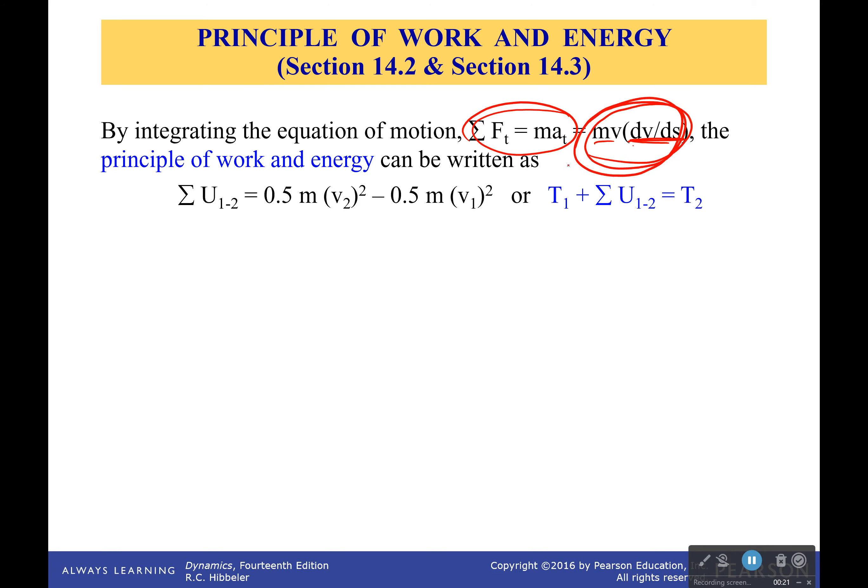So if we integrate that and we do it correctly what we'll get is that the following is true. Now what does this actually look at? Well it's saying that the sum of my work is going to be equal to the change in my energy, the change in my potential energy. Sum of my work is going to be equal to the change in my potential energy. Now where does it come from?